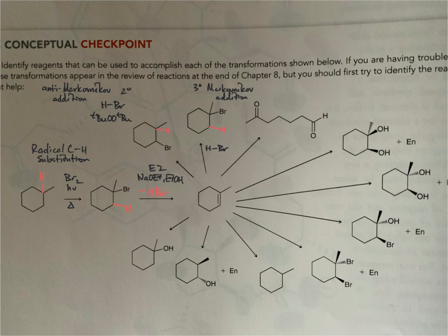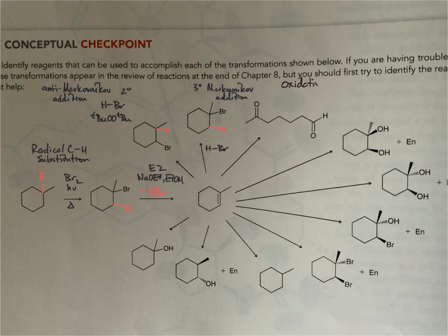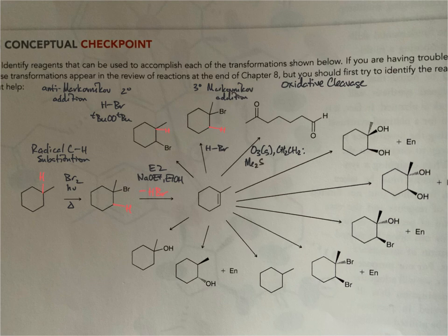Looking at the next series of reactions, we're adding heteroatoms to both carbons. In the first one, the ring has opened up and we've cleaved across the two sp²-hybridized carbons — this is oxidative cleavage. The conditions are ozone gas in a halogenated solvent, and most importantly a reductive workup with dimethyl sulfide, because we don't want further oxidation to the acid — we want to stay at the aldehyde oxidation state. This is ozonolysis, or oxidative cleavage.